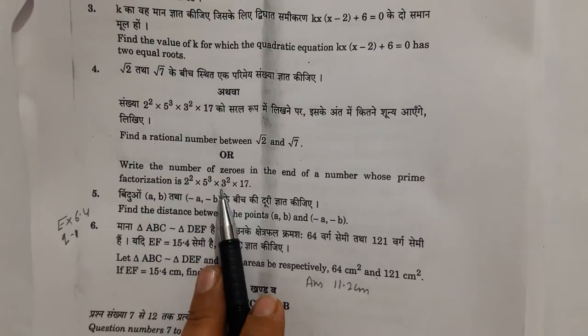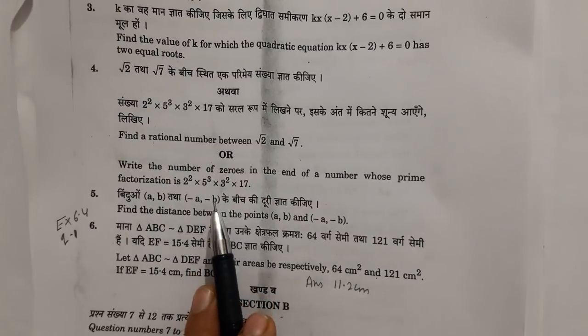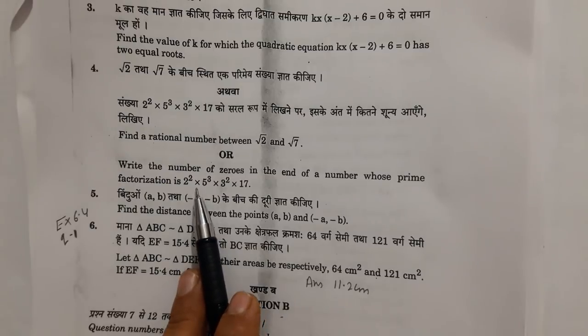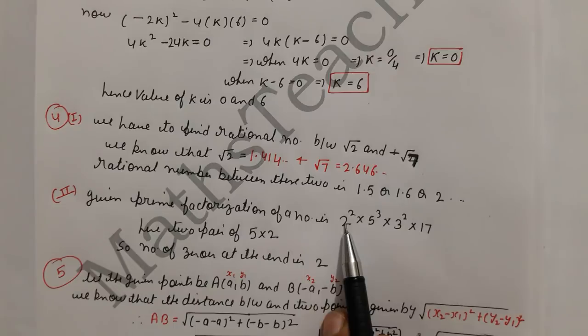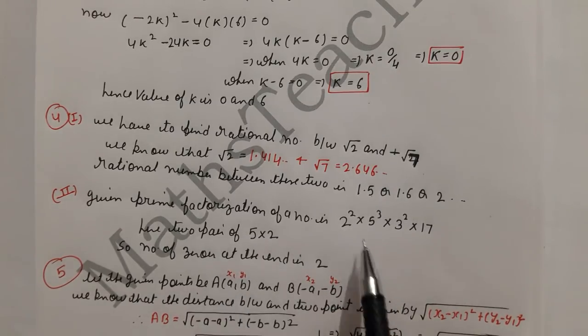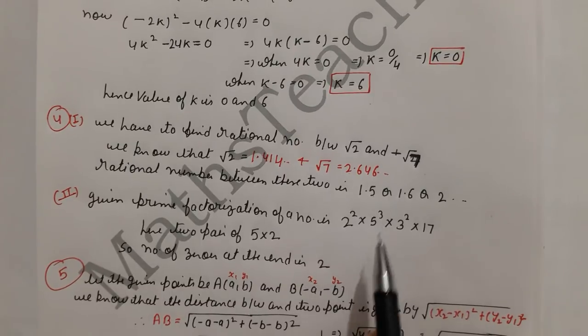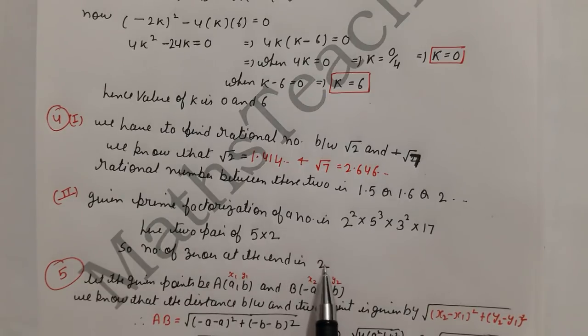When I studied this chapter, I told you that as many as 2 and 5 pairings, there will be that many zeroes. This was your exercise 1.4, the last part of chapter 1. Because in this question, 2 appears twice and 5 appears three times, but 2 and 5 pairings are only 2 pairs. So you will get 2 zeroes at the end.